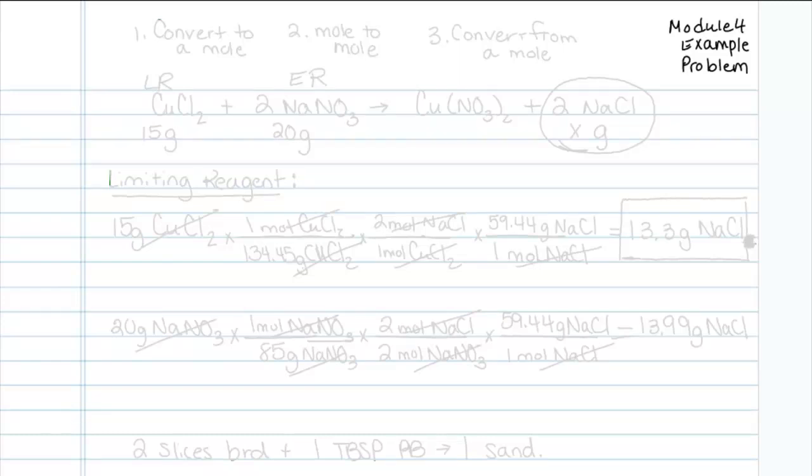In this example problem, we have an equation where copper chloride reacts with two moles of sodium nitrate to form a mole of copper nitrate and two moles of sodium chloride. In the beginning of reading this problem, it may seem just like the ones we've done before.